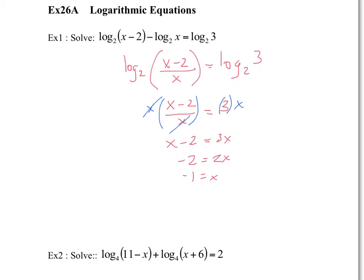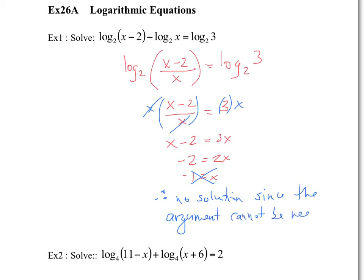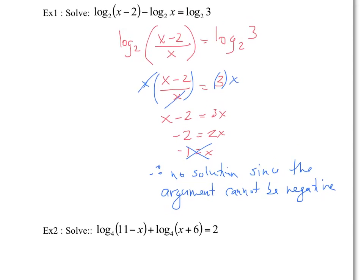We solved the equation and got x equals negative 1. But remember from the properties of logarithms, the arguments cannot be negative. If I plug in negative 1, negative 1 minus 2 is negative 3, and the other argument is also negative 1. So this is actually rejected — therefore no solution, since the argument cannot be negative. You're always going to have to check the equations: plug in the value, and if the argument is negative, you've got to reject it.